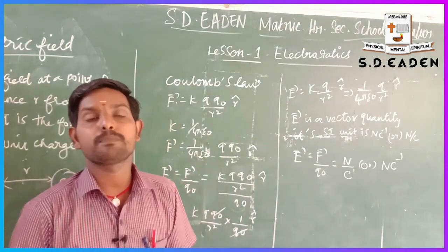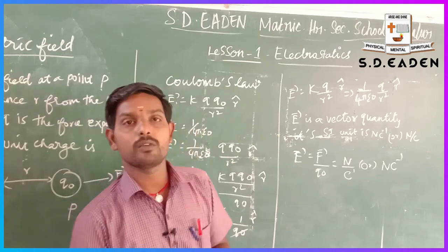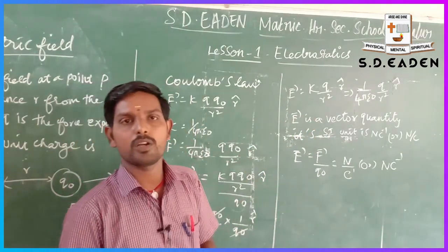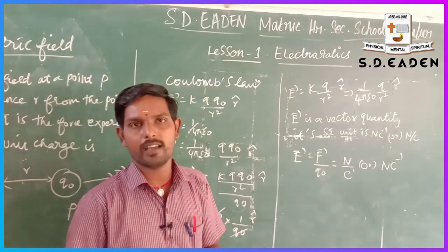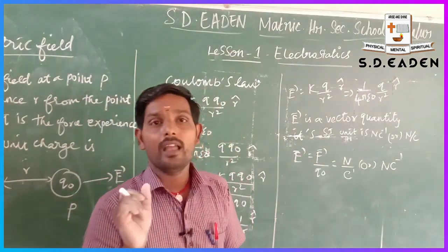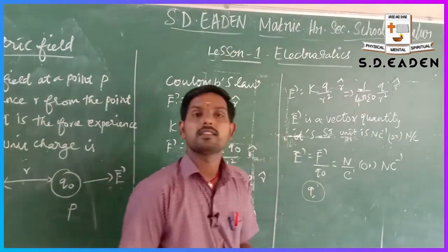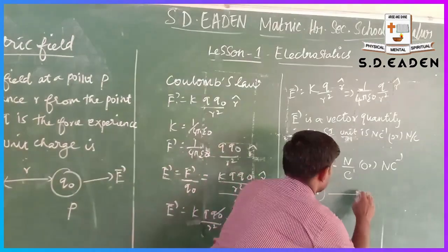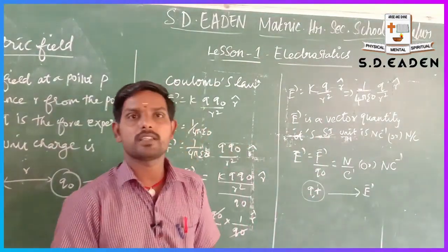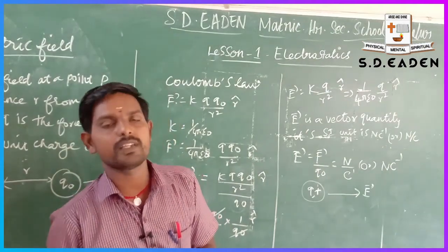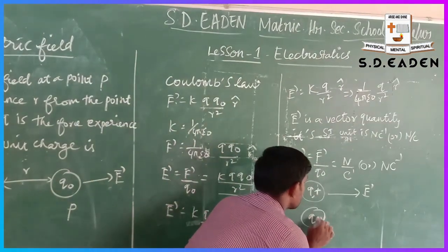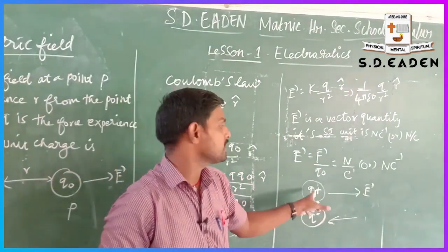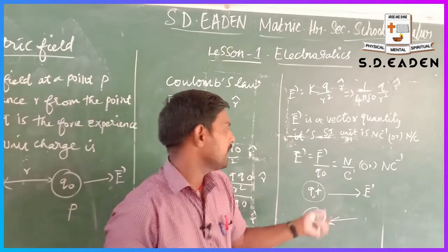Now we move on to the important aspects of electric field. There are seven aspects. The first aspect: if the charge q is positive, the electric field acts in the outward direction. If the charge q is negative, the electric field acts towards the inward direction. This is the first aspect of electric field.